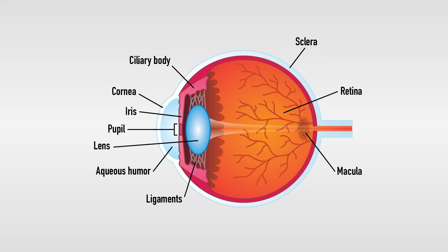Macula: in this area of the retina, there are only cones, and it corresponds to the area of highest visual acuity, with a 9 to 13 degree angular opening in the visual field. Vitreous humor: it is a transparent gelatinous mass that guarantees the eye its globular shape, crossed at its center by a thin canal called the hyaloid canal.